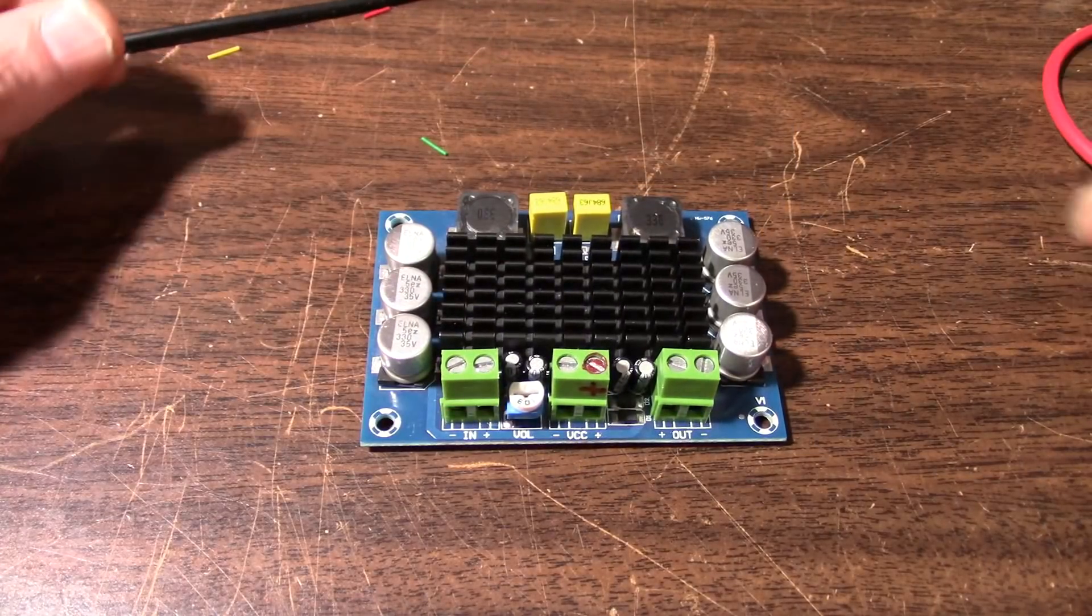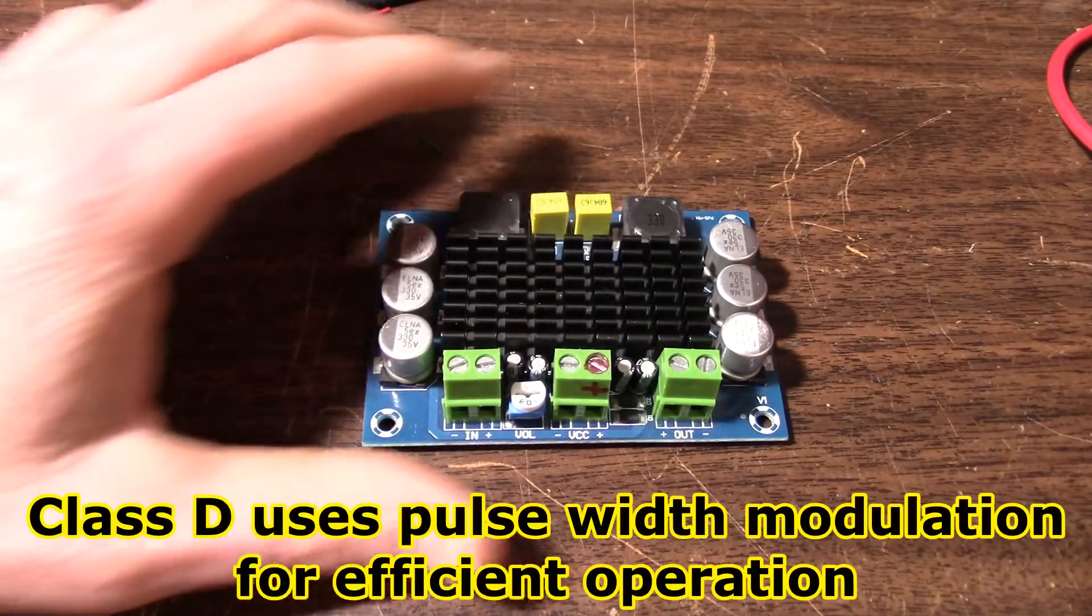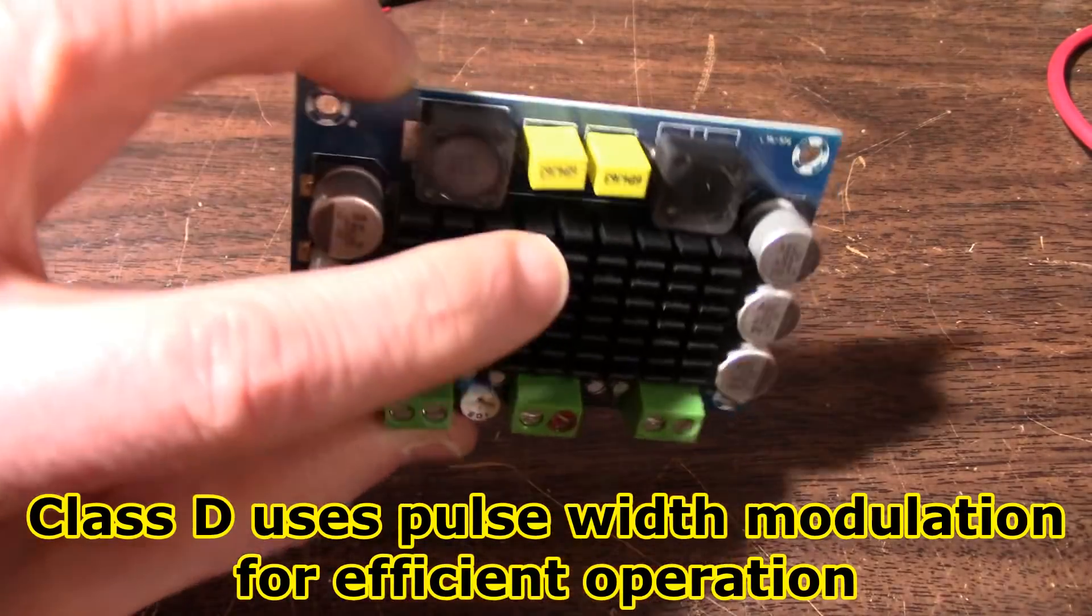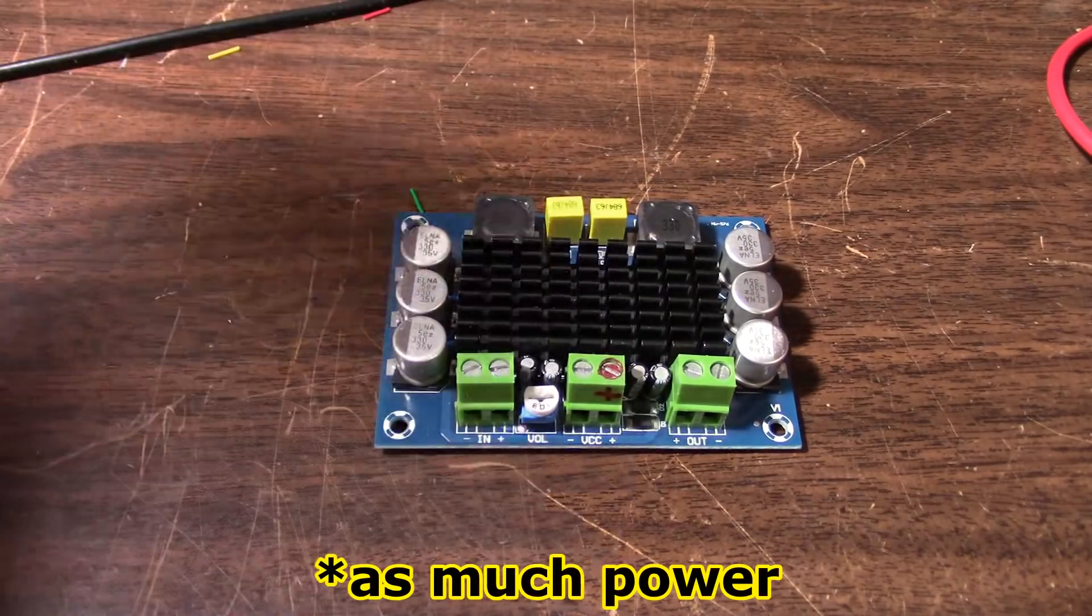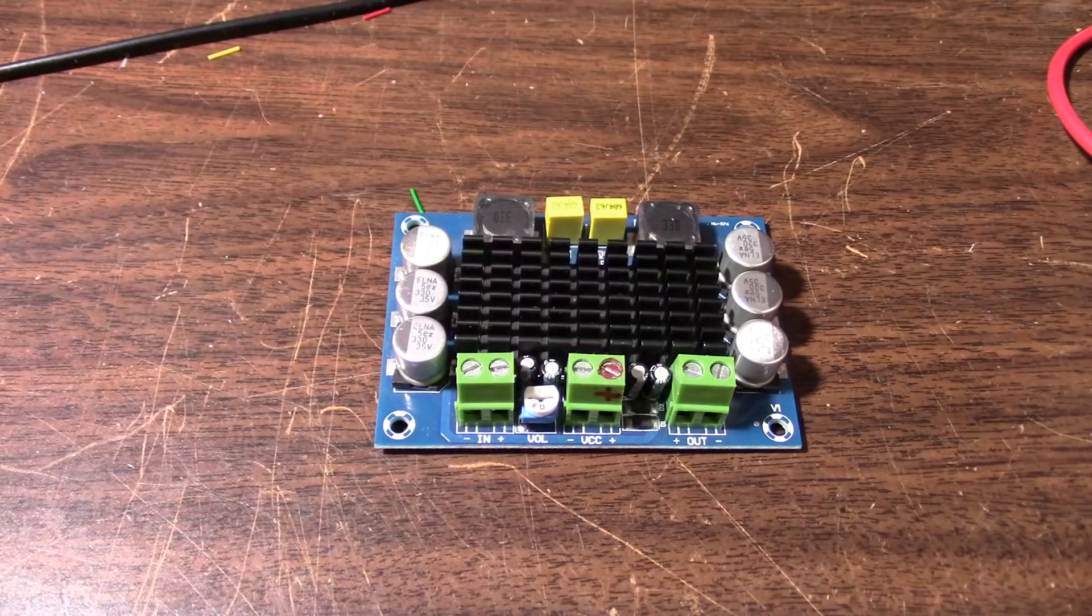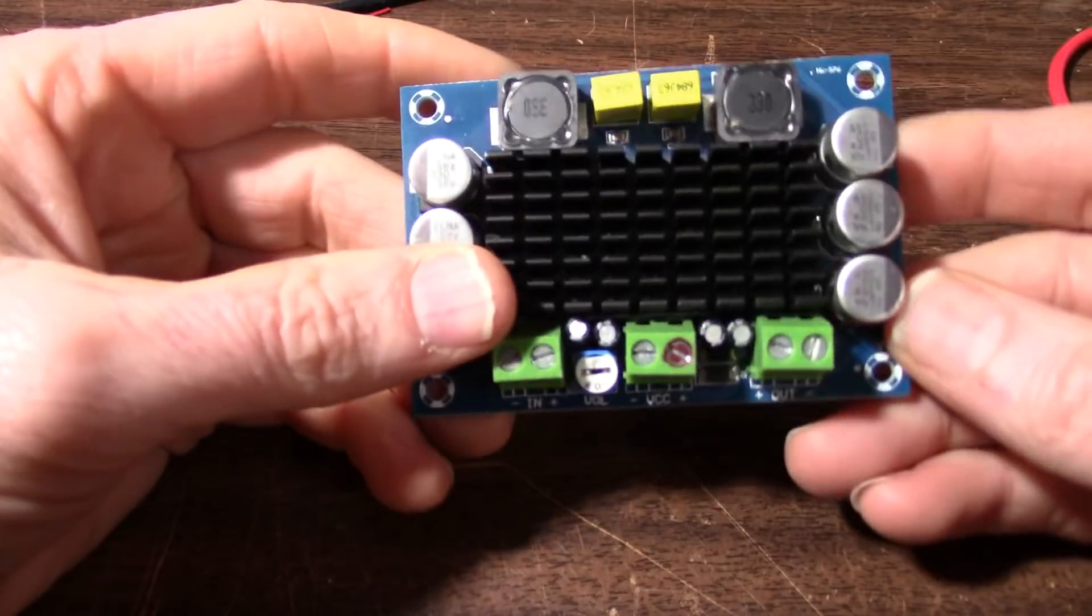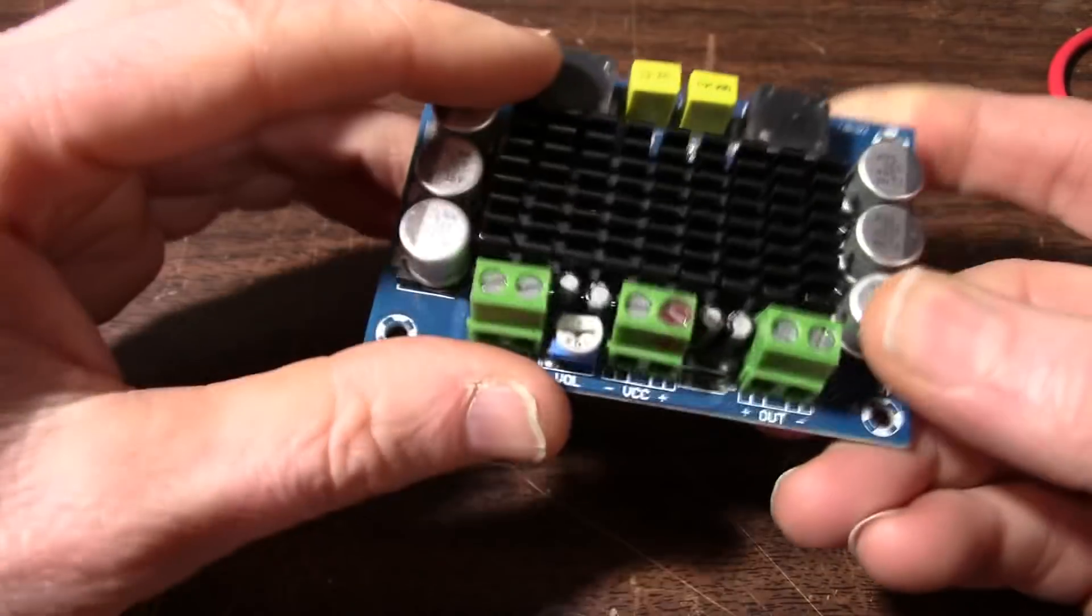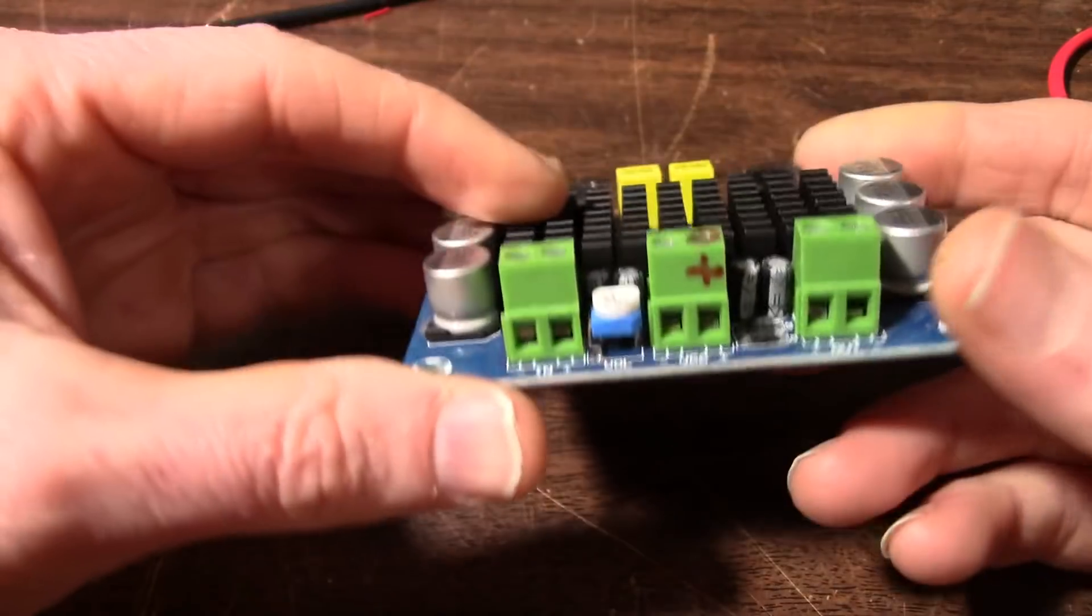As you might know, Class D amplifiers are supposed to be much more efficient. You don't need as large of a heat sink because they're not going to dissipate power. They can run up to over 90%.